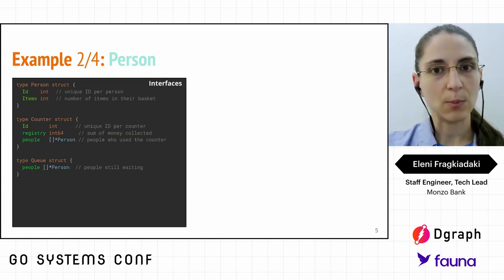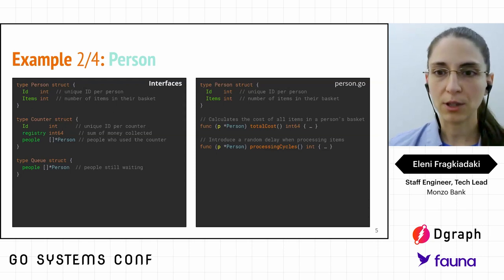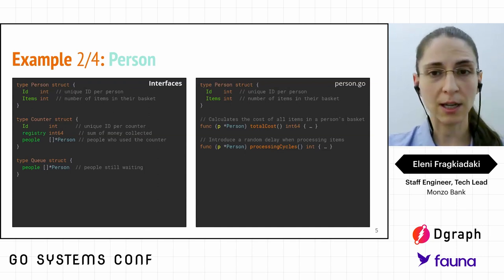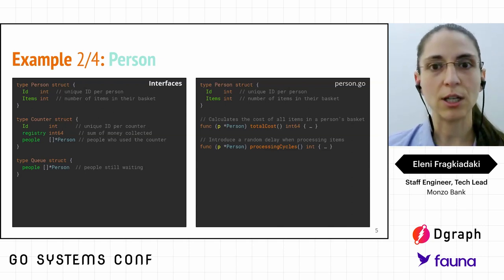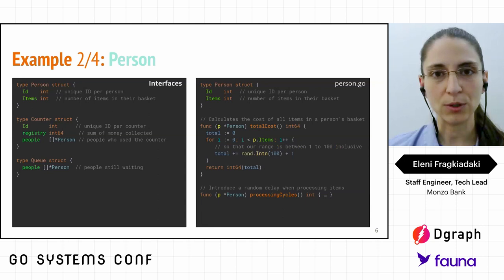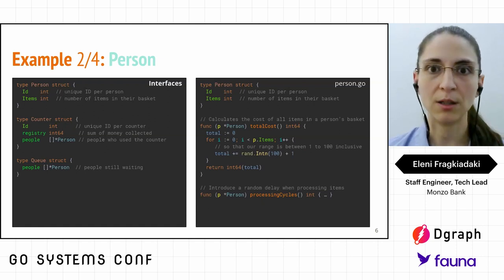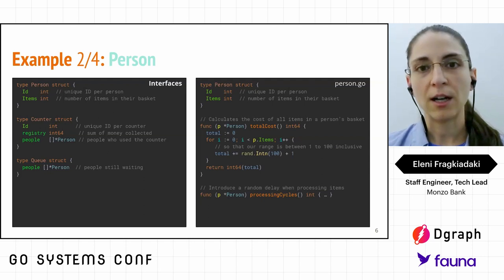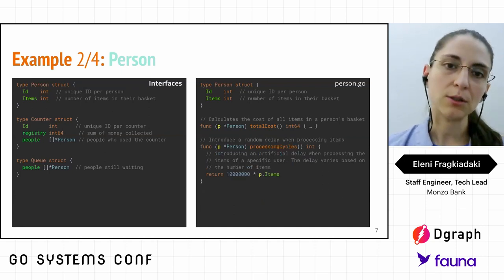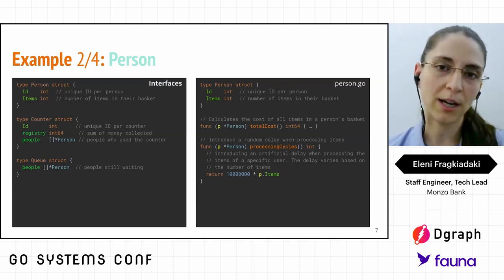Looking at the Person struct in more detail, apart from the ID and number of items, we have two functions: TotalCost and ProcessingCycles. TotalCost iterates through the number of items, generates a random integer representing the price for each item, adds all prices together, and returns the value to the caller. ProcessingCycles is simpler — it's just an artificial delay dependent on the number of items, allowing us to fluctuate the processing time based on basket size.